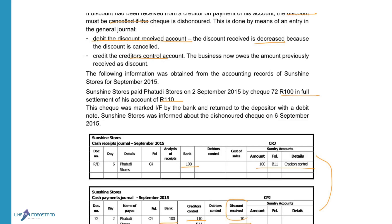In the cash payments journal, discount received is an income. In the cash receipts journal, discount allowed is an expense. So we cannot cancel the discount received in the cash receipts journal — we have to cancel it in the general journal. Discount received will be debited to indicate that the income decreases, and we will credit the creditor in the creditors ledger and credit our creditors control account with R10 to cancel the discount and show that we owe the money to the creditors.